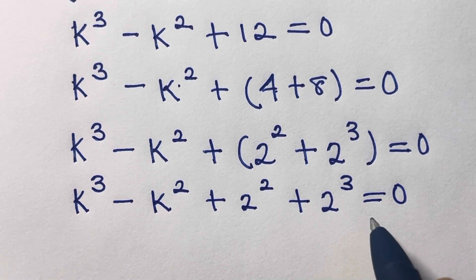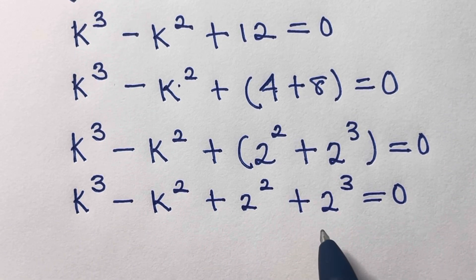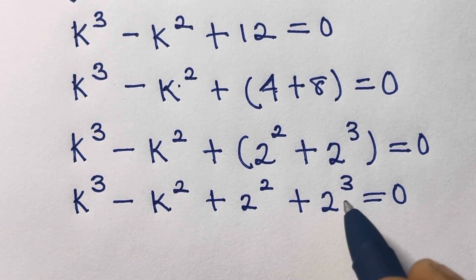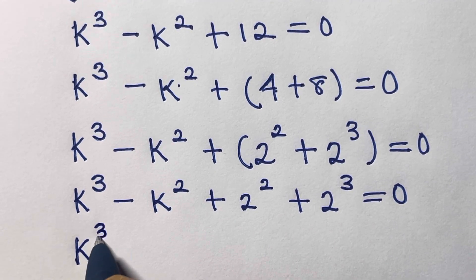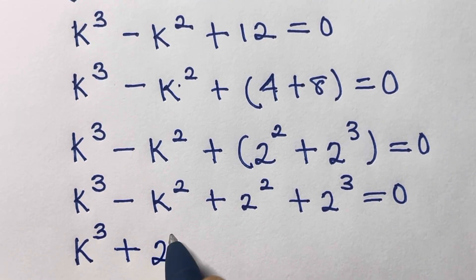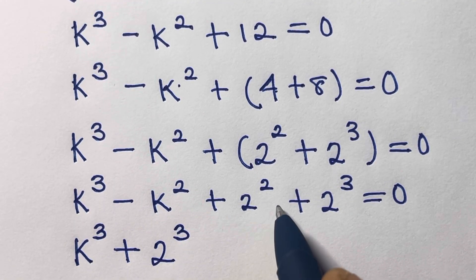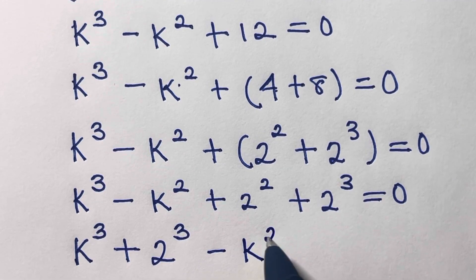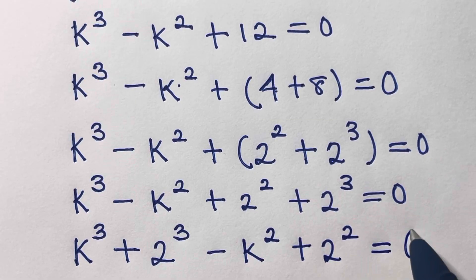The next thing we are going to do is collect the like terms according to their like powers. We have k cubed here and 2 raised to power 3 here — let's group them together. We have k cubed plus 2 cubed, then minus k squared here and 2 squared here, so we have minus k squared plus 2 squared equals 0.